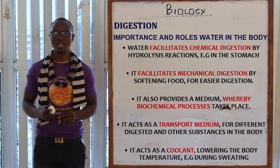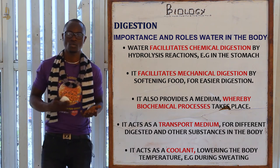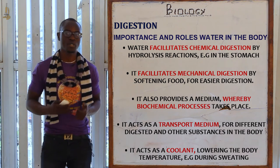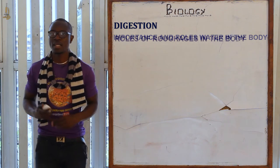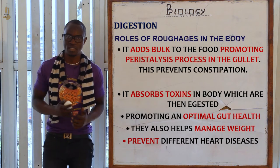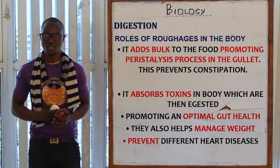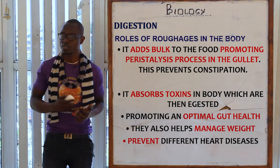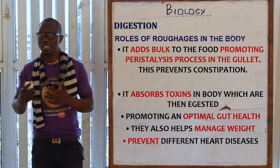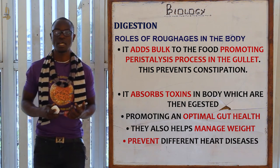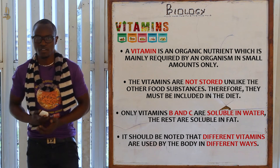Water also acts as a coolant of the body — when you are feeling hot you drink water to cool the body. Regarding roughages, they add bulk to the food, promoting peristalsis, which also prevents constipation. Roughage also aids in the absorption of toxins in the body, which are then ejected through the anus.